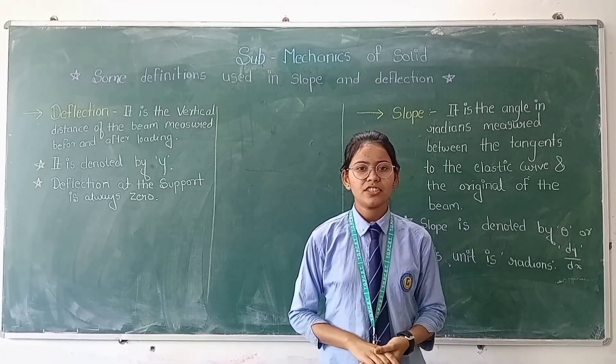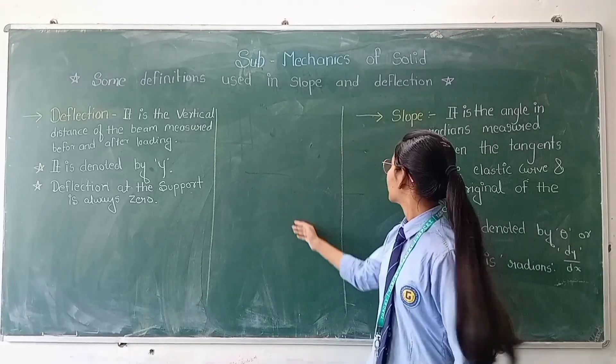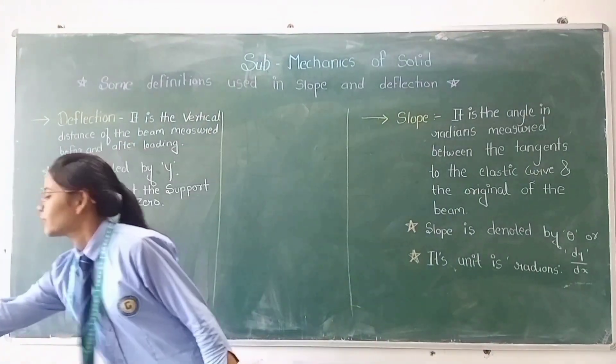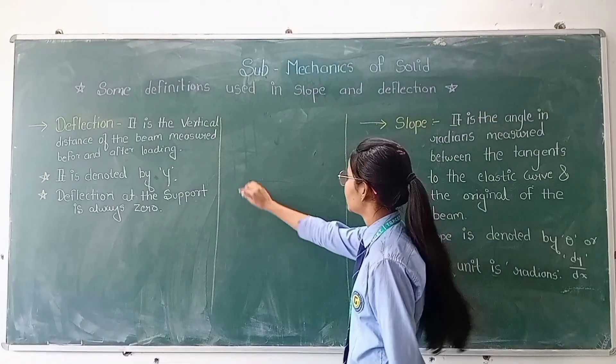Now, in some of the definitions, the first definition is deflection, and to explain the definition of deflection with a diagram, I will draw it.